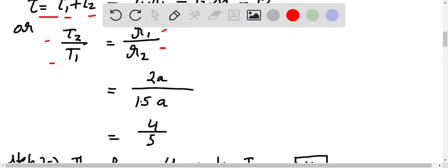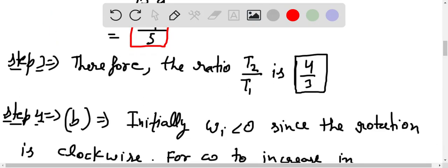By substituting the values we get 2a divided by 1.5a which equals 4/3. Therefore, the ratio T2/T1 is 4/3.